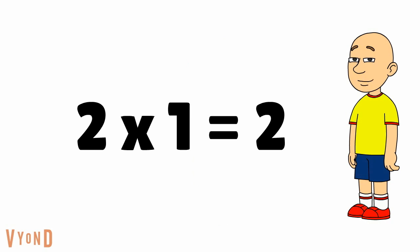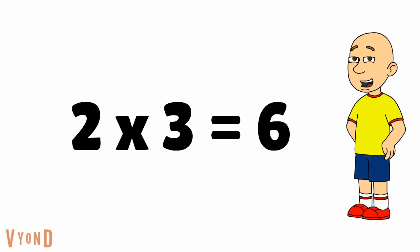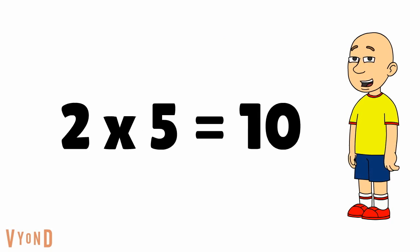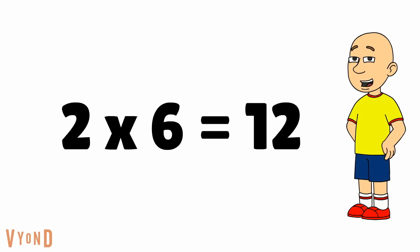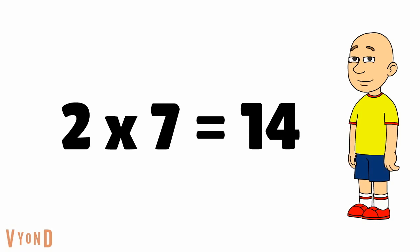2 times 1 equals 2. 2 times 2 equals 4. 2 times 3 equals 6. 2 times 4 equals 8. 2 times 5 equals 10. 2 times 6 equals 12. 2 times 7 equals 14. 2 times 8 equals 16. 2 times 9 equals 18.